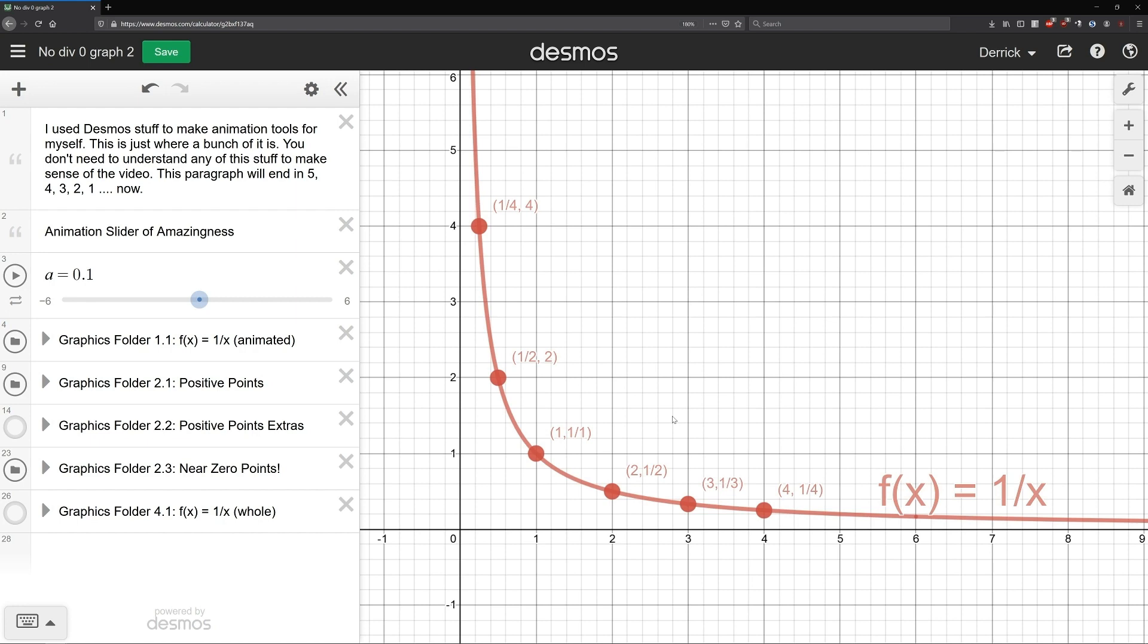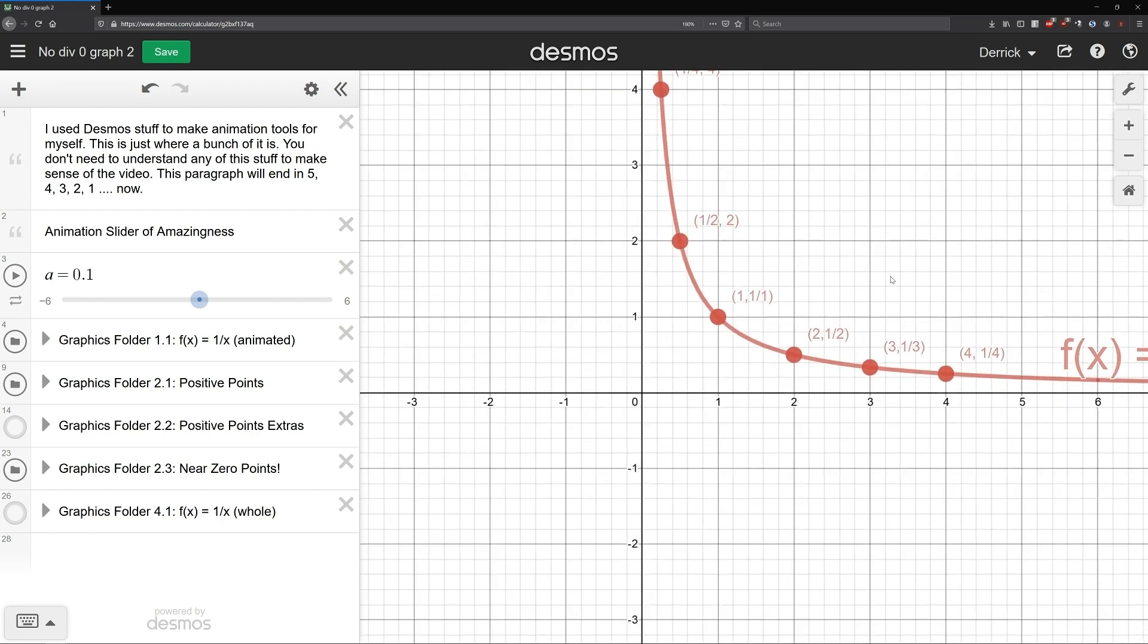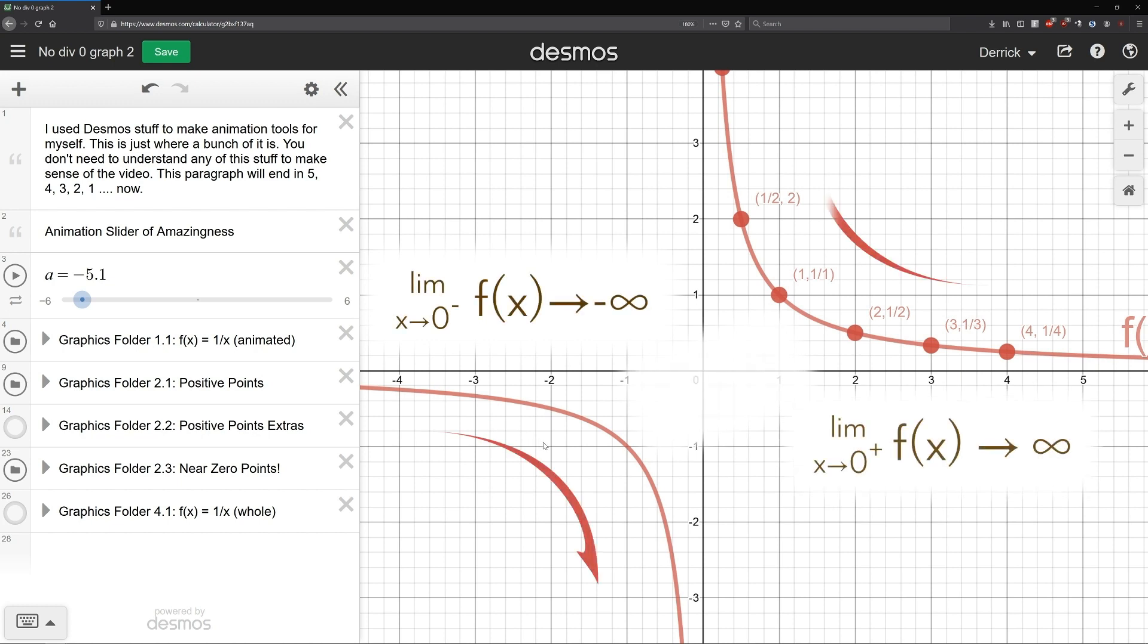We also need to look at the other side of this graph. Doing this procedure to the left, what we did when we came in from the right, leads us to negative infinity. What this means is that even if you did overcome those earlier problems somehow, you would then be shut down by someone coming along and using that exact same logic to tie the value of one over zero to negative infinity, an answer that couldn't be any more different.